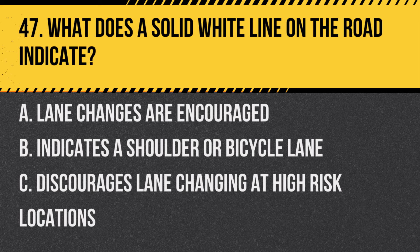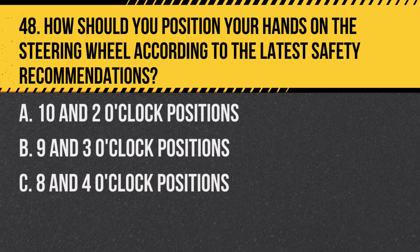Question 47: What does a solid white line on the road indicate? A. Lane changes are encouraged. B. Indicates a shoulder or bicycle lane. C. Discourages lane changing at high risk locations. Answer: C. Discourages lane changing at high risk locations. A solid white line on the road typically indicates that lane changes are discouraged due to potentially hazardous conditions.